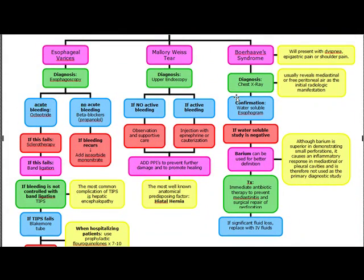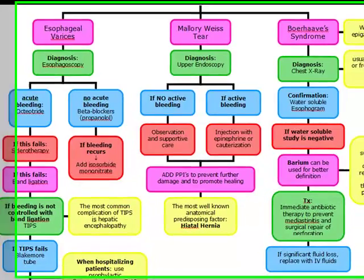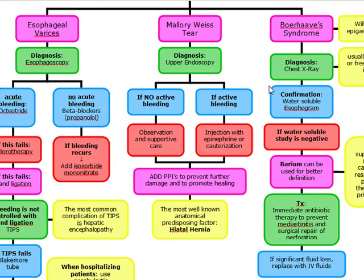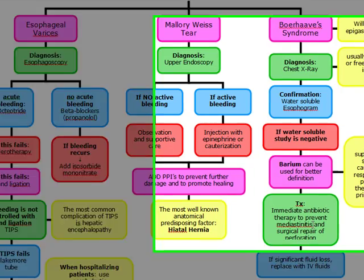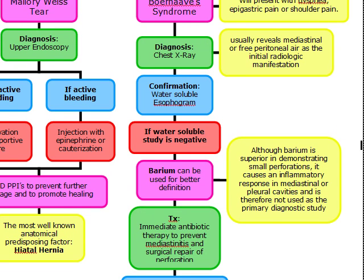Review — Mallory-Weiss tear: diagnose with upper endoscopy; no active bleeding means supportive care; active bleeding means epinephrine injection or cauterization. All patients receive a PPI. The most well-known predisposing factor is hiatal hernia. Boerhaave's presents with dyspnea and epigastric or shoulder pain; diagnose with chest X-ray, confirm with water-soluble esophagram (use barium if negative, though it causes inflammatory response). Treatment: antibiotics, surgical repair, and IV fluids if needed.